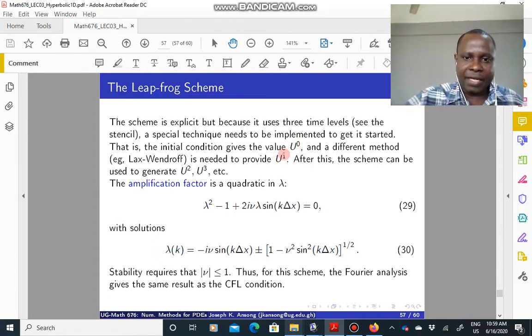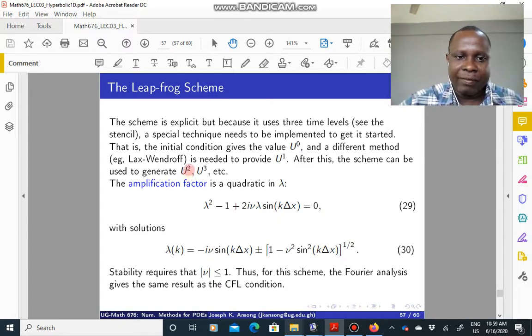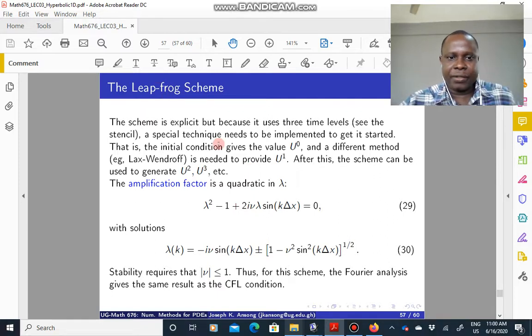Once you have u at level 0 and 1, then you can start using the leapfrog scheme to compute u at level 2, at level 3, and so on. So that is how this leapfrog scheme works.